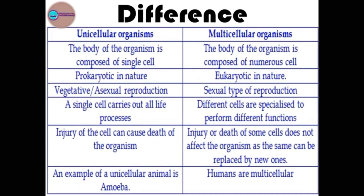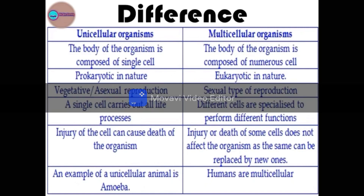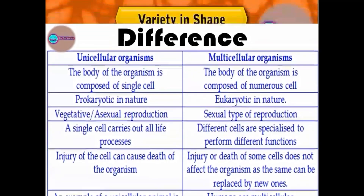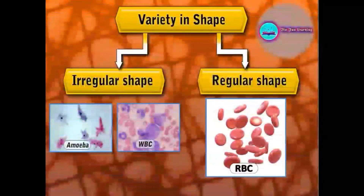Just like when you have an injury, the dead cells can be replaced. Examples of unicellular organisms are amoeba and paramecium. Examples of multicellular organisms are humans, plants, and animals.